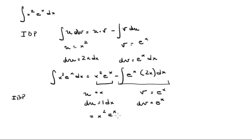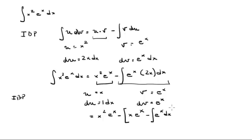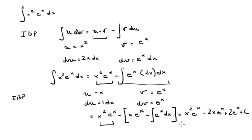So this remains x squared e to the x minus, and opening a bracket, we apply the same formula: u times v, where u is x and v is e to the x, minus the integral of v du, where v is e to the x and du is 1 dx. This comes out to be x squared e to the x minus 2x e to the x plus 2 e to the x plus c.